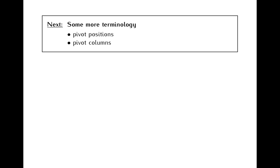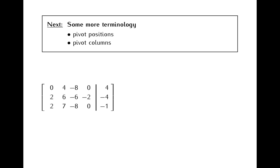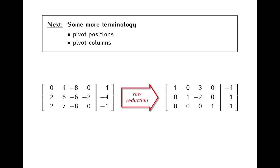In this segment, I will talk some more about terminology associated with systems of linear equations and matrices. The key notions we will discuss here will be pivot positions and pivot columns of a matrix. The motivation for these notions is as follows: if we want to solve a system of linear equations, the key step is to take the augmented matrix of the system and perform a row reduction to obtain a matrix in reduced echelon form.